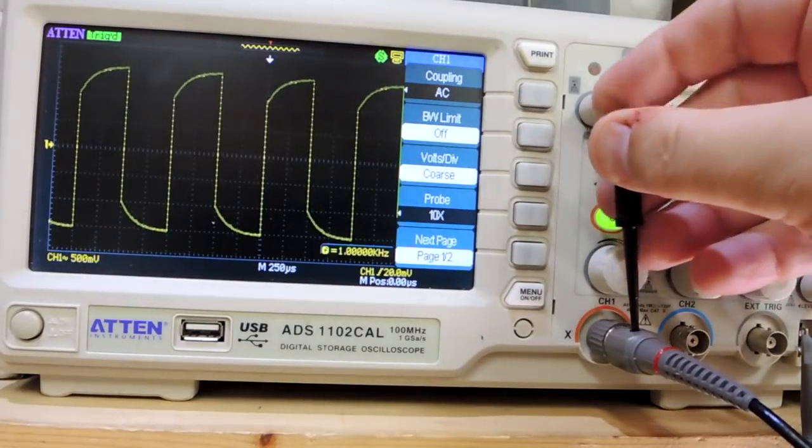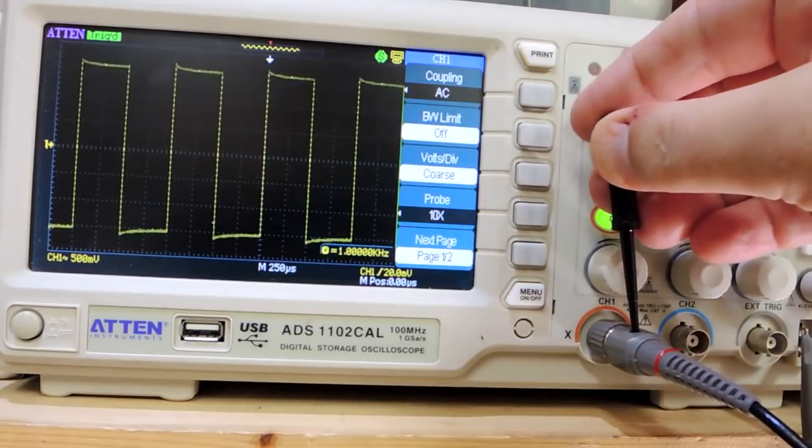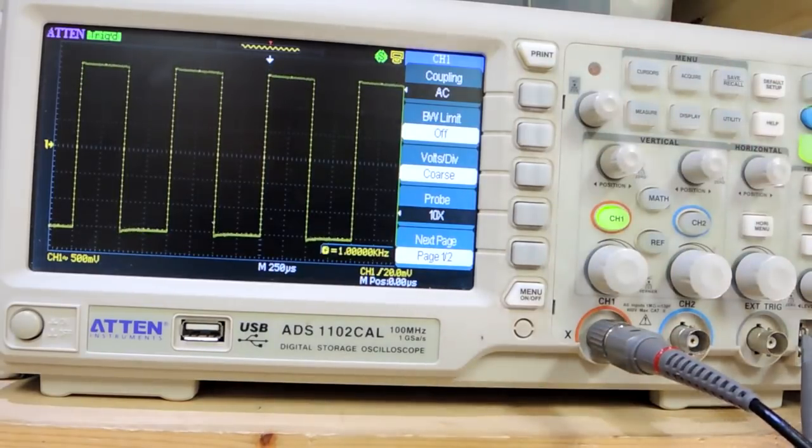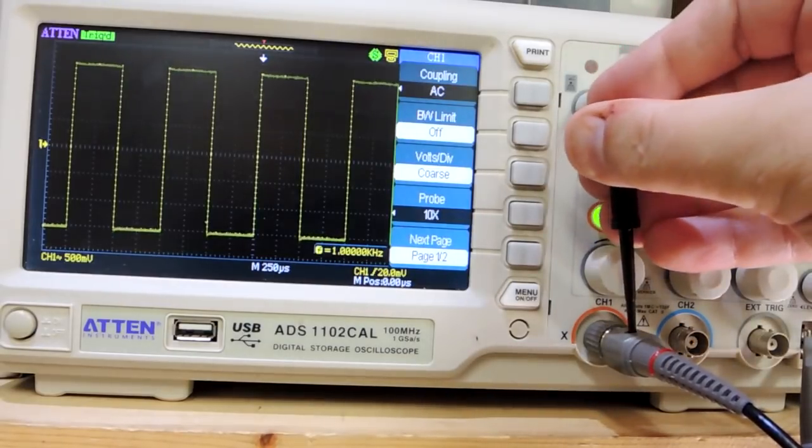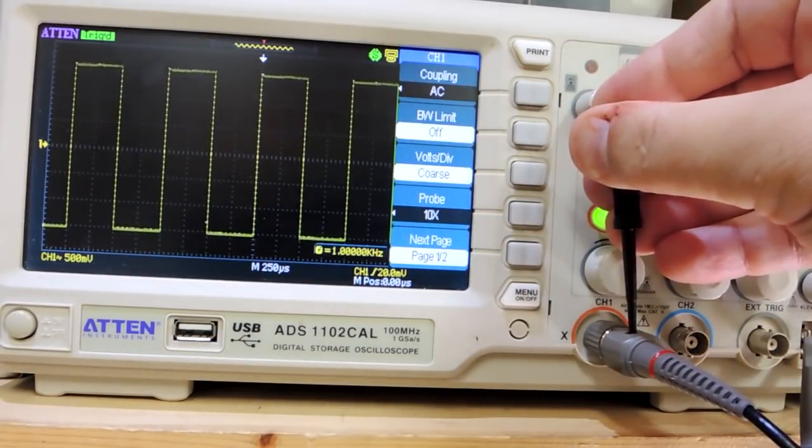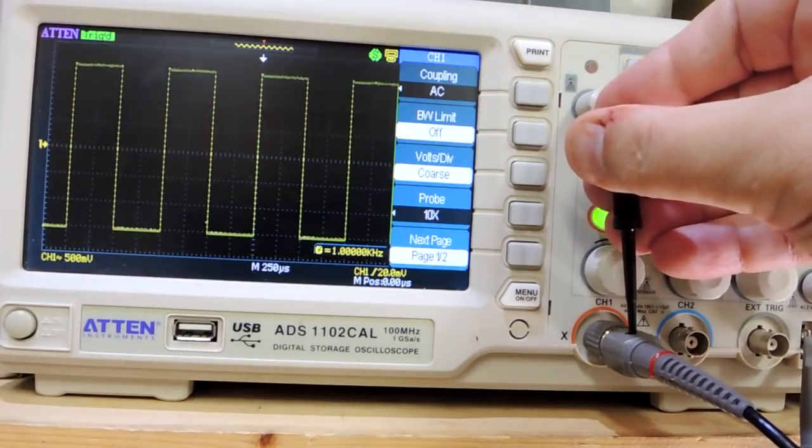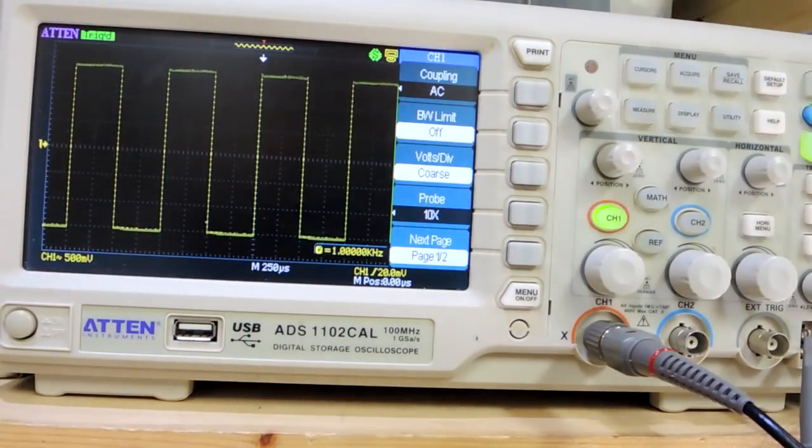Before we start the test, I'll make sure the frequency response is optimal. The scope has a one kilohertz output that you can use to calibrate a probe and make sure its frequency response is good. They're now looking good. Let's go over to the frequency domain away from the time domain to get these probes' frequency response.